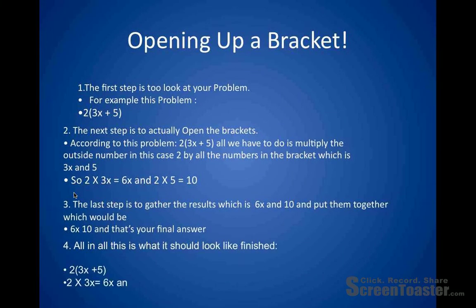All in all, this is what it should look like finished. 2 and parentheses 3x plus 5. 2 times 3, which would equal 6x, and 2 times 5, which would equal 10. And the final answer would be 6x, 10.